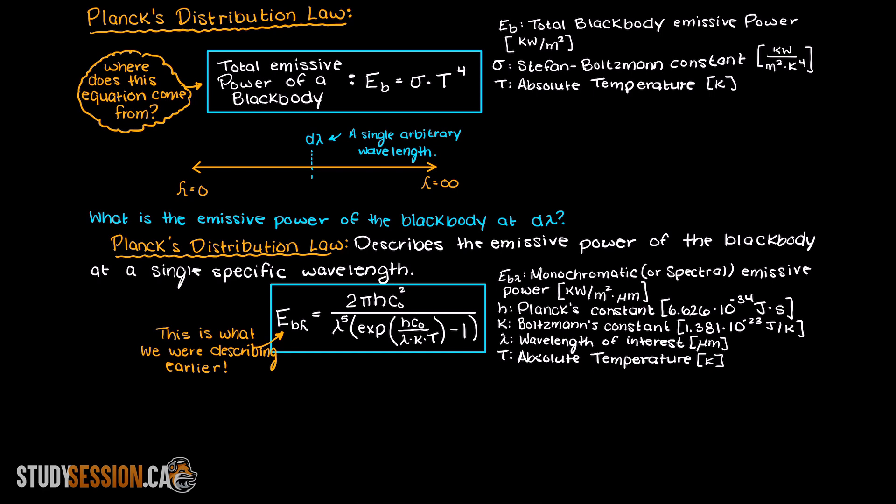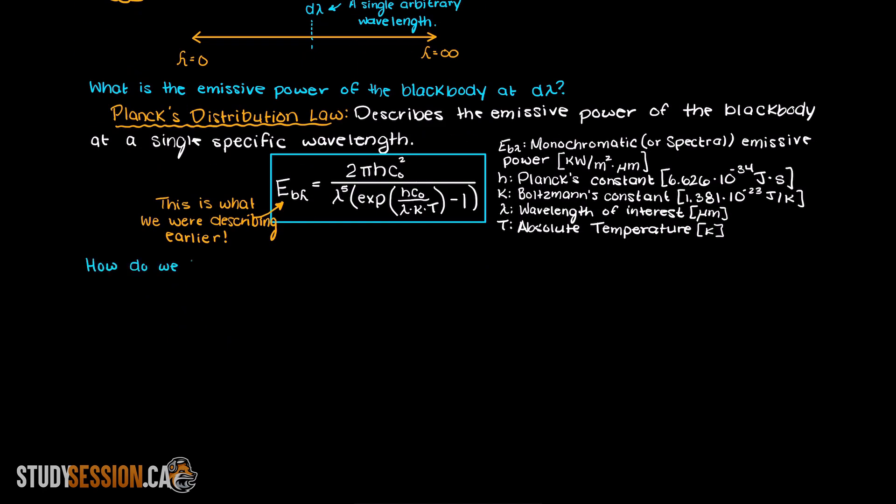So now that we know what the emissive power of a single wavelength of our blackbody is, how do we translate that into finding the total emissive power of our blackbody? Well, couldn't we just integrate for every possible wavelength, and wouldn't that give us the total emissive power of our blackbody?